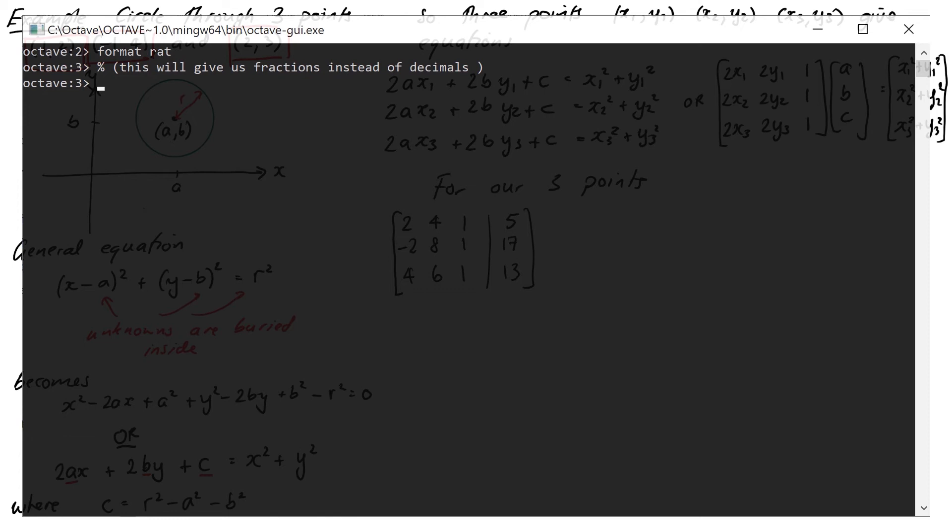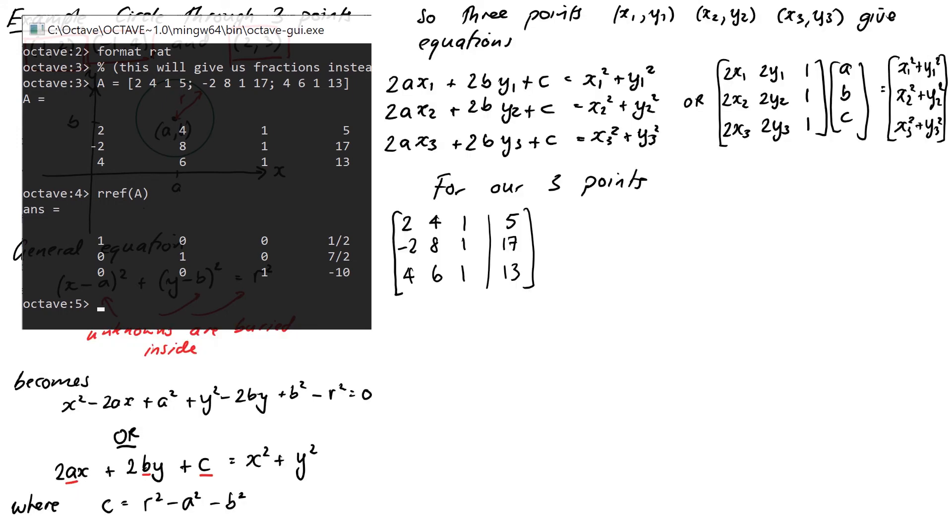So I'm just going to enter my augmented matrix this time directly as A, and I will use the reduced row echelon form RREF command to get my reduced row echelon form. This time it's of an augmented matrix, so I should be able to read off the solution just from the right-hand column of that matrix. So we can see that A is a half, B is 7 over 2, and C is negative 10.